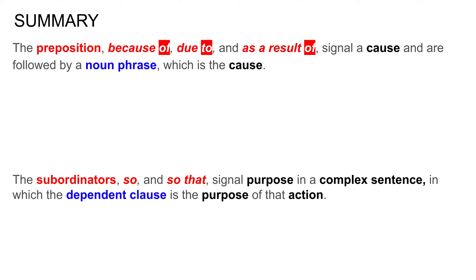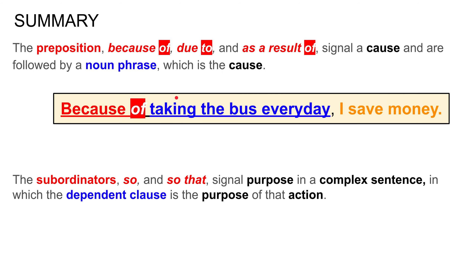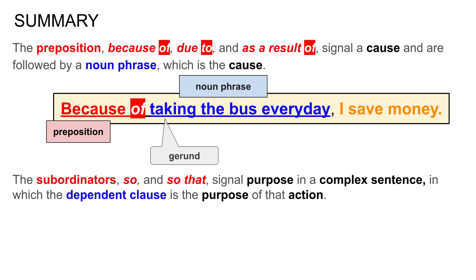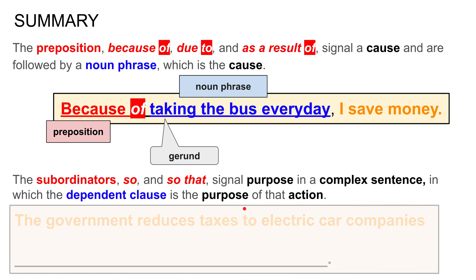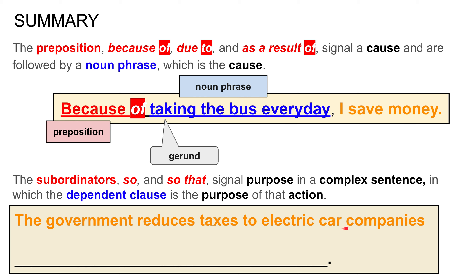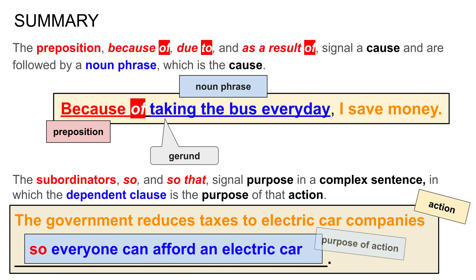Summary: The prepositions 'because of,' 'due to,' and 'as a result of' signal a cause and are followed by a noun phrase which is the cause. For example: 'Because of taking the bus every day' — preposition followed by gerund noun phrase — 'I save money' — the effect. The subordinators 'so' and 'so that' signal the purpose in a complex sentence, where the dependent clause is the purpose of the action. For example: 'The government reduces taxes to electric car companies' — the action — 'so everyone can afford an electric car' — the purpose of that action.